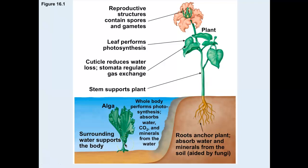Going back to algae: they reproduce by having gametes float around in the water in a moist environment where cells stay intact. But on land, cells would dry out — a tiny egg cell or sperm cell would completely dry out and die in just a few minutes. So land plants have developed ways to protect their eggs and sperm from drying out.